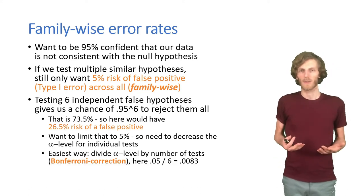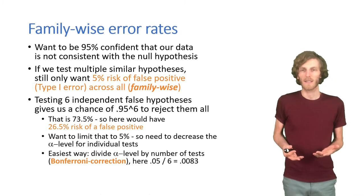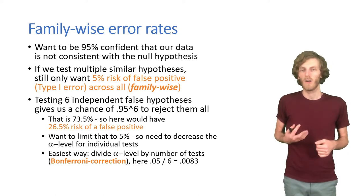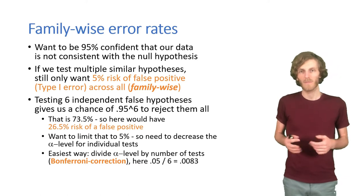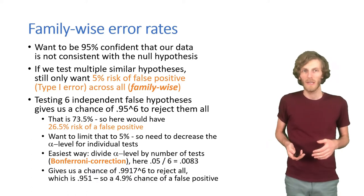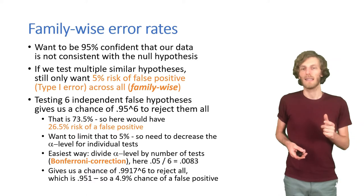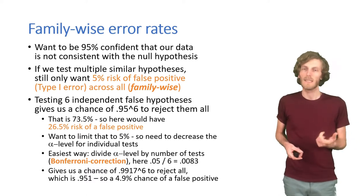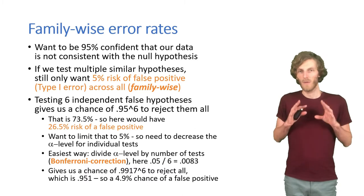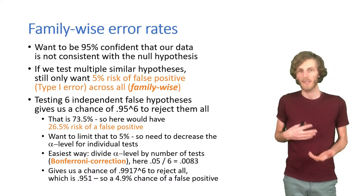And the way to get there is to decrease the alpha level, to be stricter for each individual hypothesis. And the easiest way, and therefore one of the most common ways to do it, is just to divide the alpha level by the number of tests. It's a so-called Bonferroni correction. So we divide the 0.05 alpha level by 6, get an adjusted alpha level of 0.0083. And we now use that as our decision threshold. If we now repeat the calculation I just showed you, and take the adjusted likelihood of being correct in rejecting to the power of 6, we see that we only have a 4.9% chance of getting something wrong, which is what we want. So when we have multiple comparisons, we need to control for the family-wise error rate, generally by adjusting the alpha level.